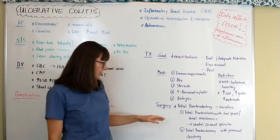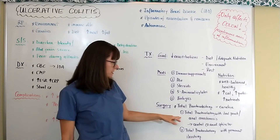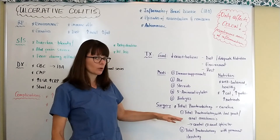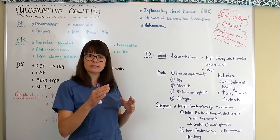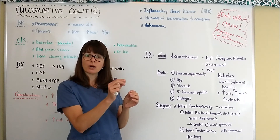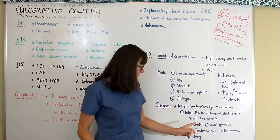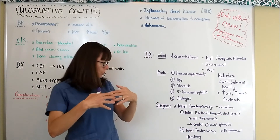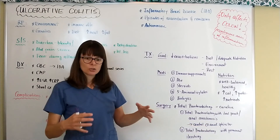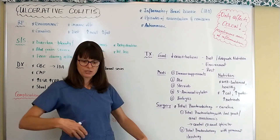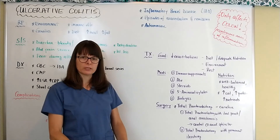There are two options. The first is a total proctocolectomy with an ileal pouch-anal anastomosis (IPAA). Since the colon and rectum are removed, the ileum — the end of the small intestine — is connected to the anus. The patient still has control at the anal sphincter and is able to have regular bowel movements through the anus.